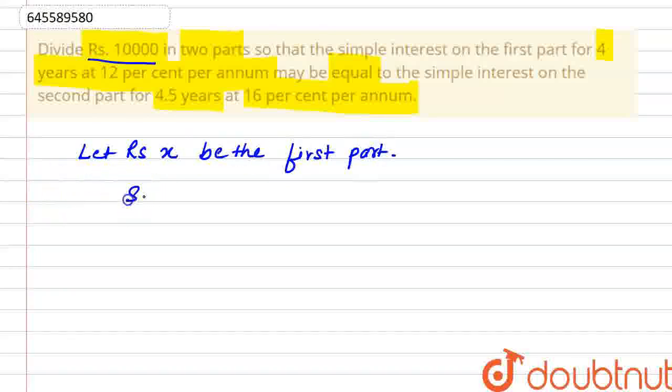So, how much will our second part be? What will our second part be? Rs. 10,000 minus x. x was the first, so the second will be 10,000 minus x. Now, what do we have to do? We have to use the normal simple interest formula here. And we know that simple interest is equal to principal into r into t divided by 100.